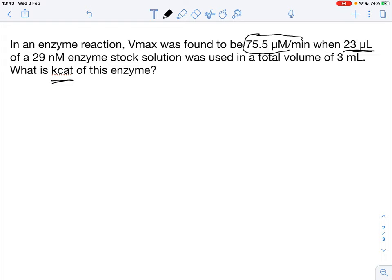So we know that kcat is defined as the Vmax, the maximum speed of the reaction, divided by the total enzyme concentration. I write it like that. So the total enzyme concentration that we have in our mixture.